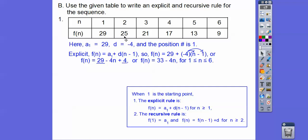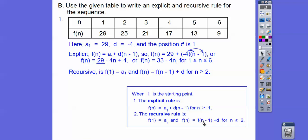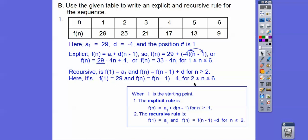The recursive rule is f(1) = 29, and f(n) = f(n−1) − 4, for n greater than or equal to 2.